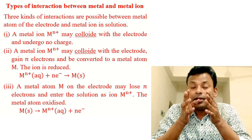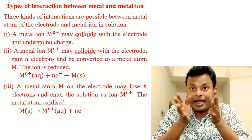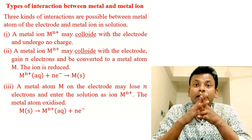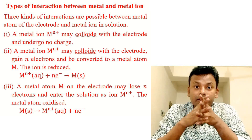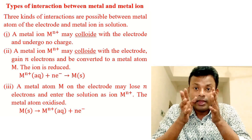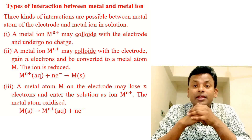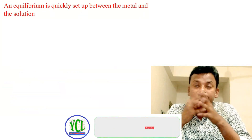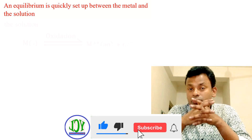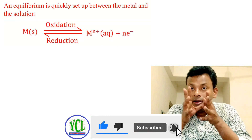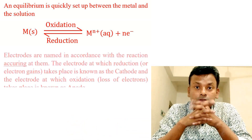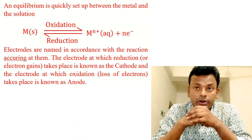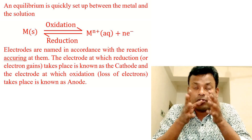Third, a metal atom on the electrode may lose n electrons and enter the solution as an ion Mⁿ⁺ — that is, the metal atom is oxidized: M(s) → Mⁿ⁺ + ne⁻. An equilibrium is quickly set up between the metal and the solution: M(s) ⇌ Mⁿ⁺ + ne⁻.